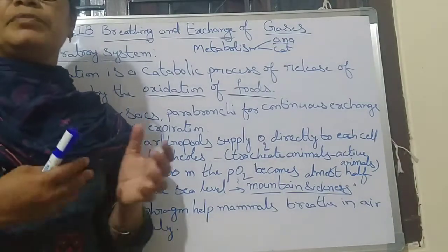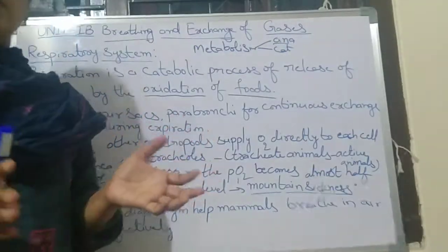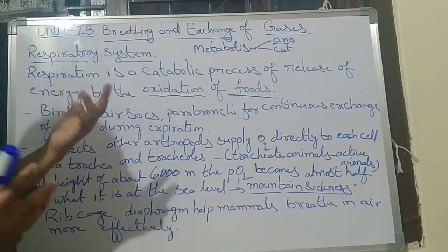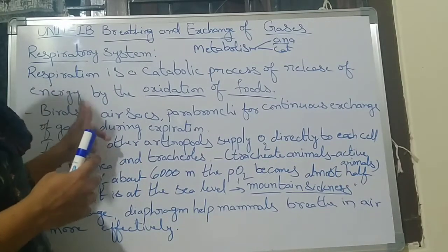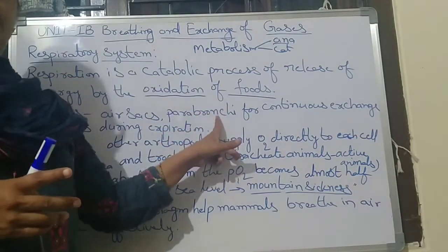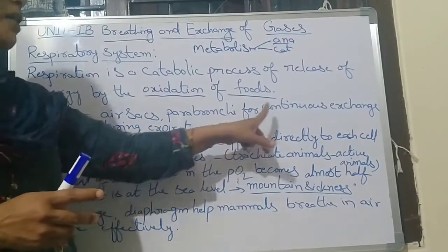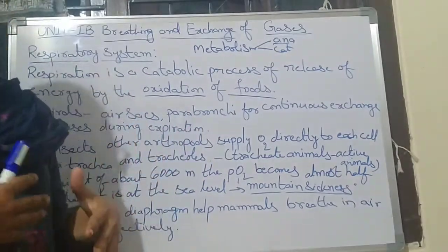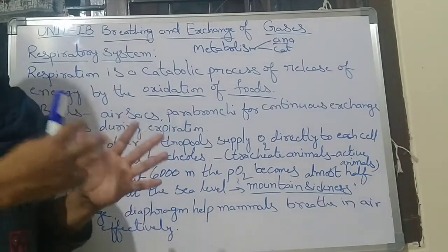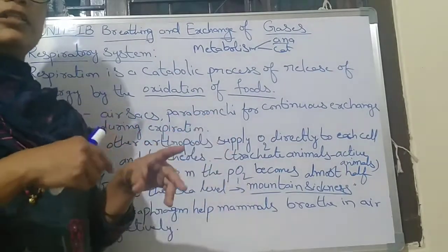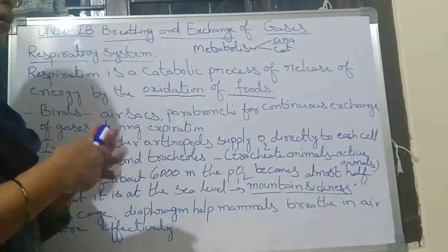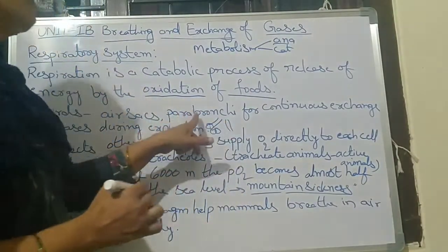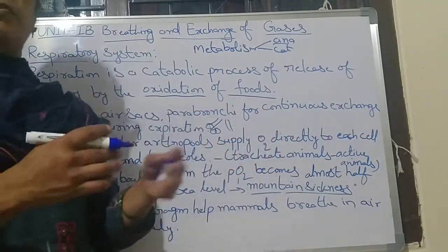In different animals, different respiratory organs are present — not all animals respire the same way. Birds are aerial animals; they respire through air sacs and para bronchi for continuous exchange of gases. They contain eight pairs of air sacs. Para bronchi are small tubes that contain these air sacs, and together they enable continuous gas exchange in birds.